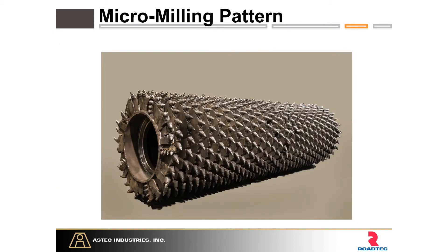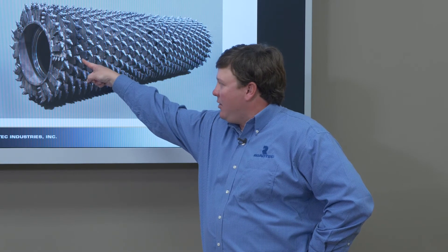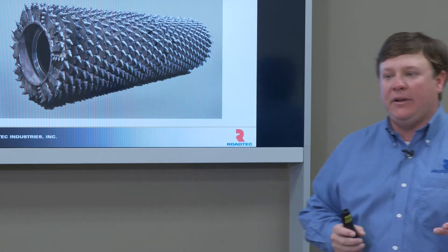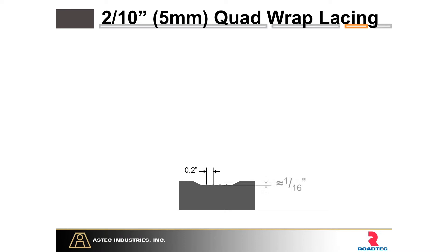Jumping to the other end of the spectrum — this is a micro mill drum. You can see it has a very excessive amount of teeth. We no longer have the knock-out holders we talked about earlier; these are weld-on holders. So once worn through the teeth, to repair this you would have to cut and weld on another holder rather than knock it out with tools. But we provide a much smoother, finer surface necessary for ultra-thin overlay.